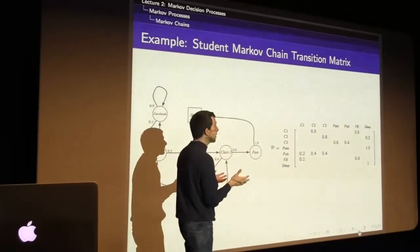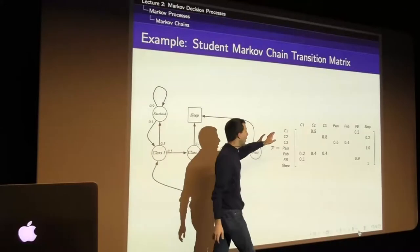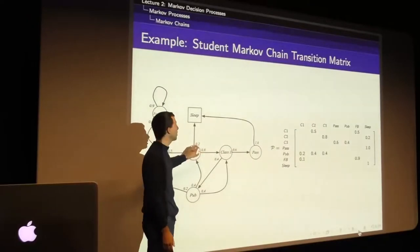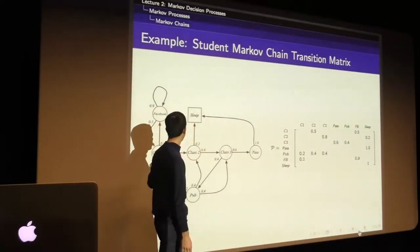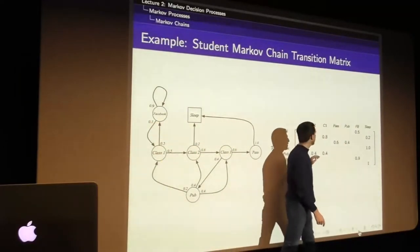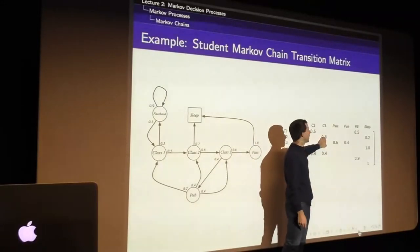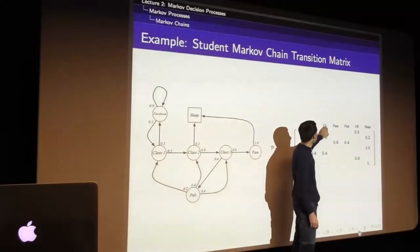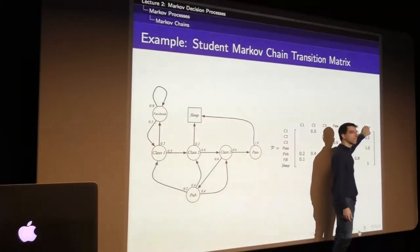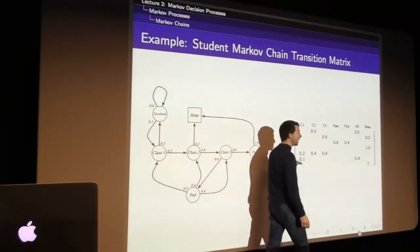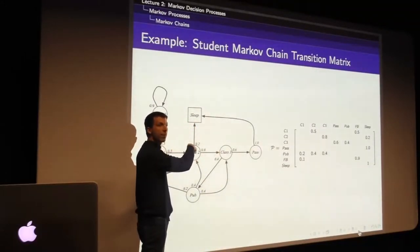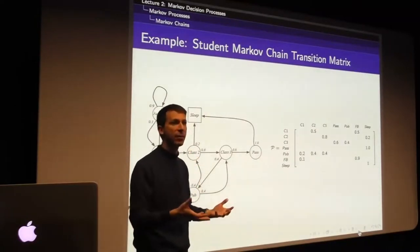The transition matrix for this problem fully describes everything. For any state we might have been in, what's the probability of transitioning to any other? For class two, looking across that row: there's a 0.8 probability of transitioning to class three, and a 20% chance of transitioning to the sleep state. Looking at all rows together fully describes the entire dynamics, and we can sample repeatedly from this matrix to get sequences from this Markov process.